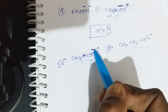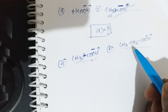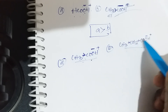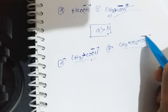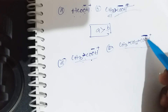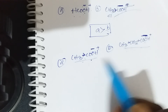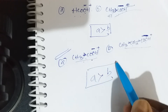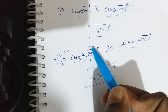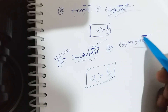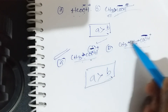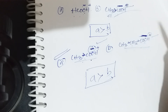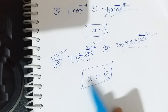In propanoic acid, there is an ethyl group on the backside of the COOH, and ethyl is a more releasing group than methyl. So there is more negative charge on oxygen in propanoic acid, meaning the O–H attraction is stronger and H⁺ cannot be easily removed. Therefore, acetic acid (A) is more acidic than propanoic acid (B), due to less negative charge on oxygen in acetic acid, resulting in weaker O–H attraction and easier H⁺ removal.